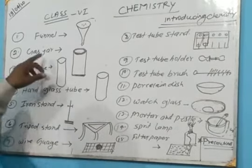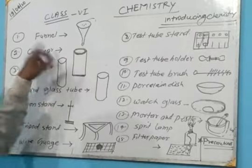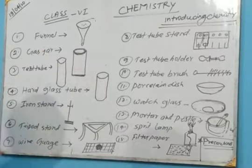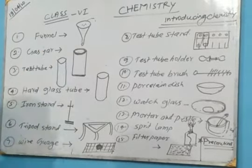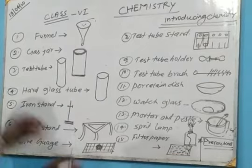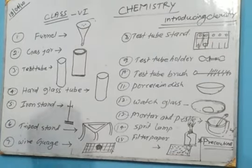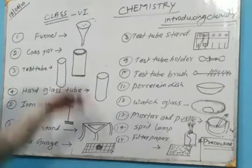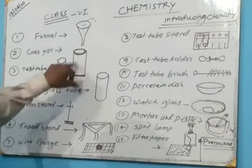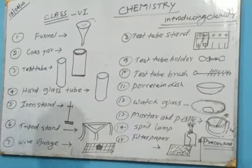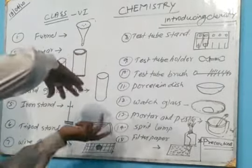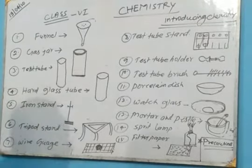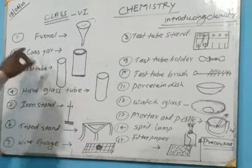Next apparatus: gas jar. What is a gas jar? A gas jar is a type of apparatus which is used for collecting gas - the same amount of hydrogen gas, oxygen gas, nitrogen gas. That gas can be collected using a gas jar. It comes in a large size and a small size. So, we call it gas jar.